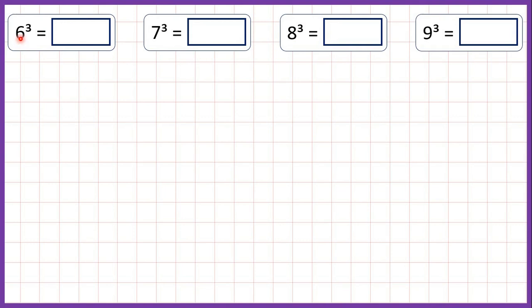For this first question, we have 6 and a little 3, which we read as 6 cubed. Now this 3 means multiply the number by itself and then multiply it by itself again.